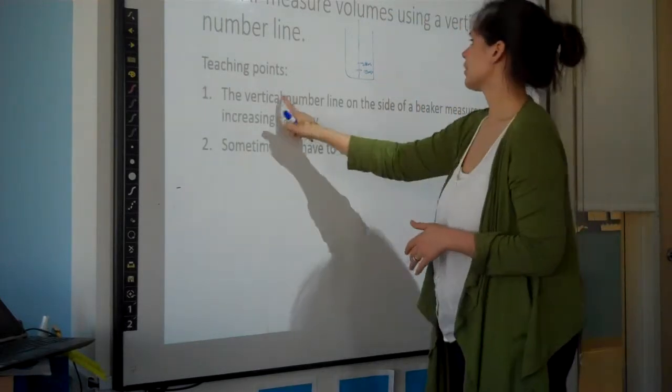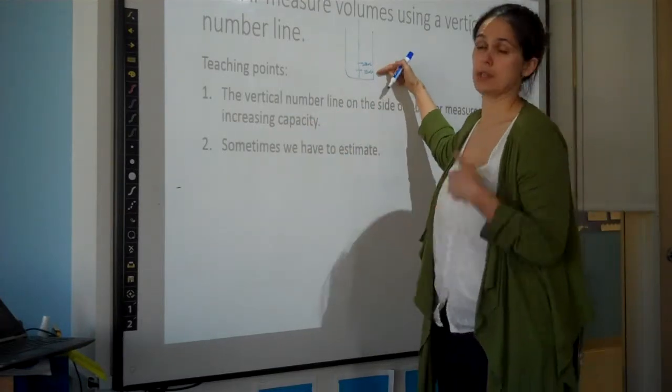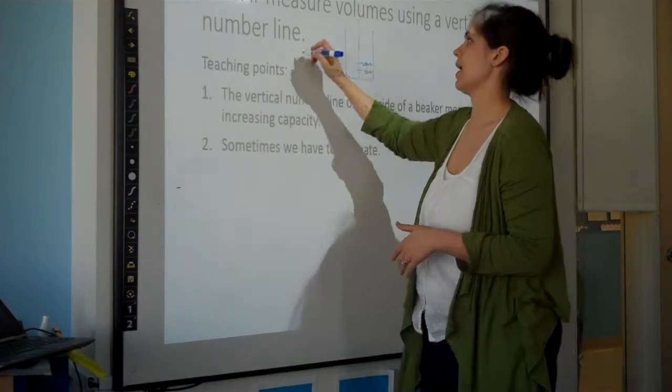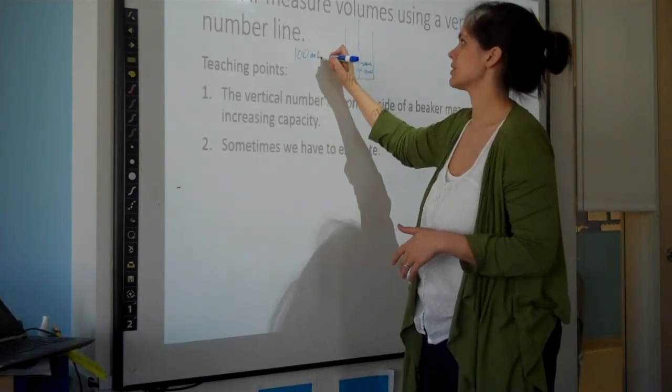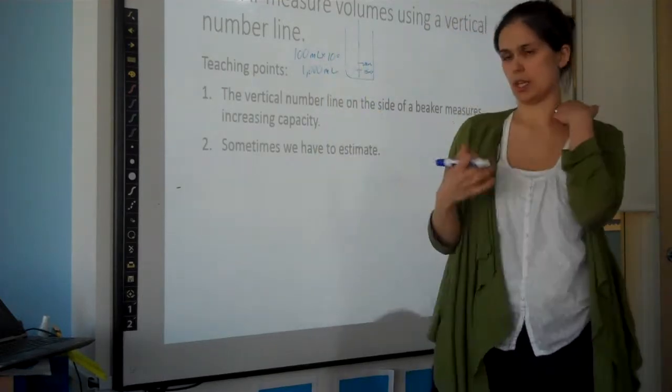So you're using the vertical number line to measure increasing capacity. You're also going to make a prediction as you go along on how you make a liter, so you're viewing that idea that a hundred milliliters times ten is a thousand milliliters, which is a liter.